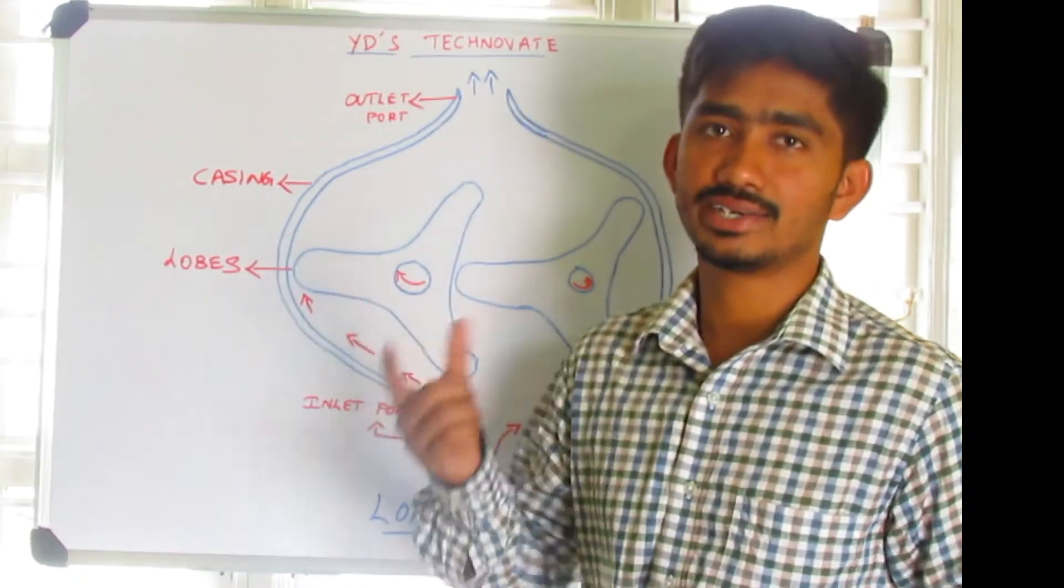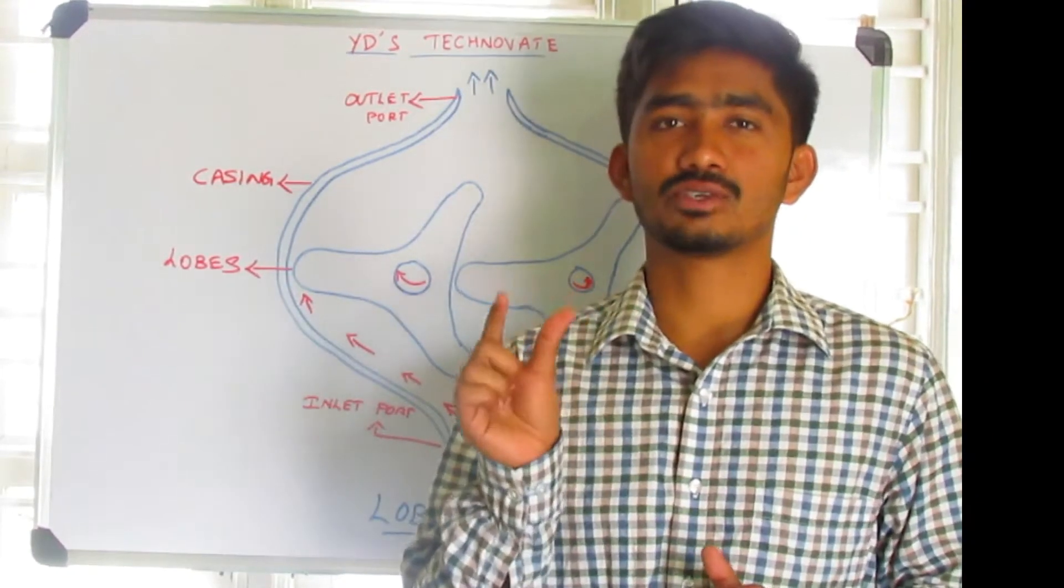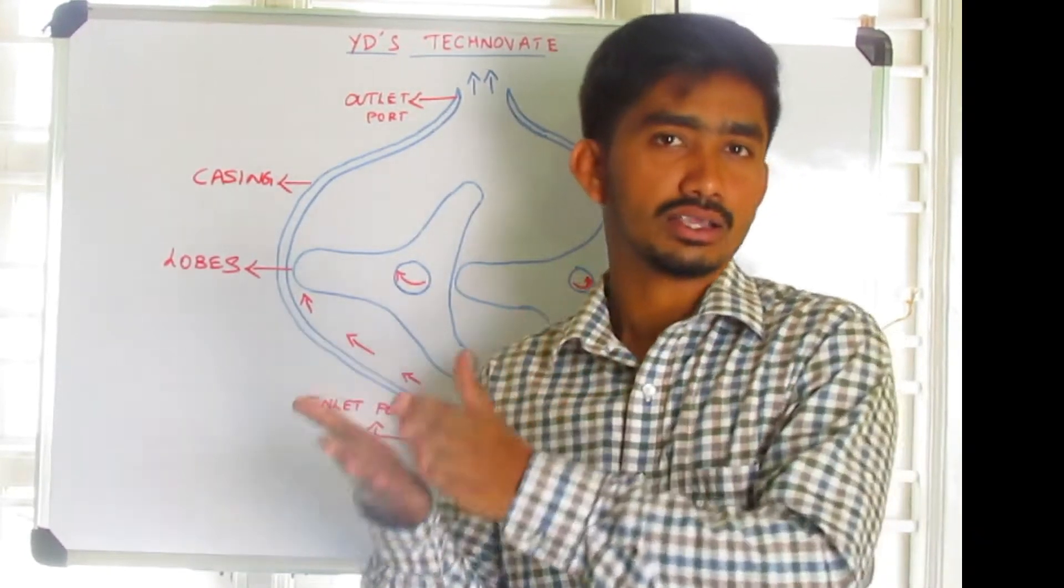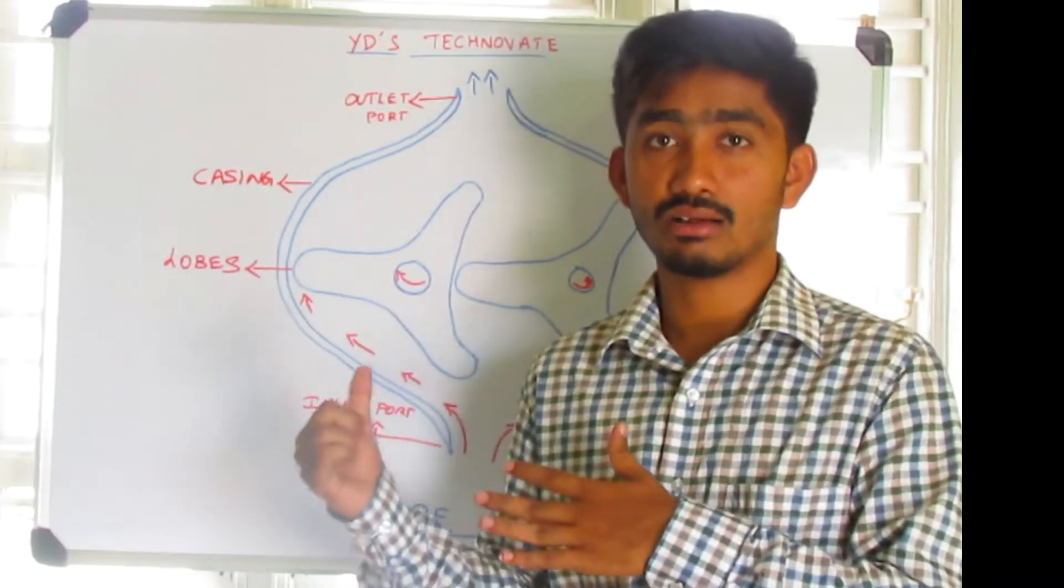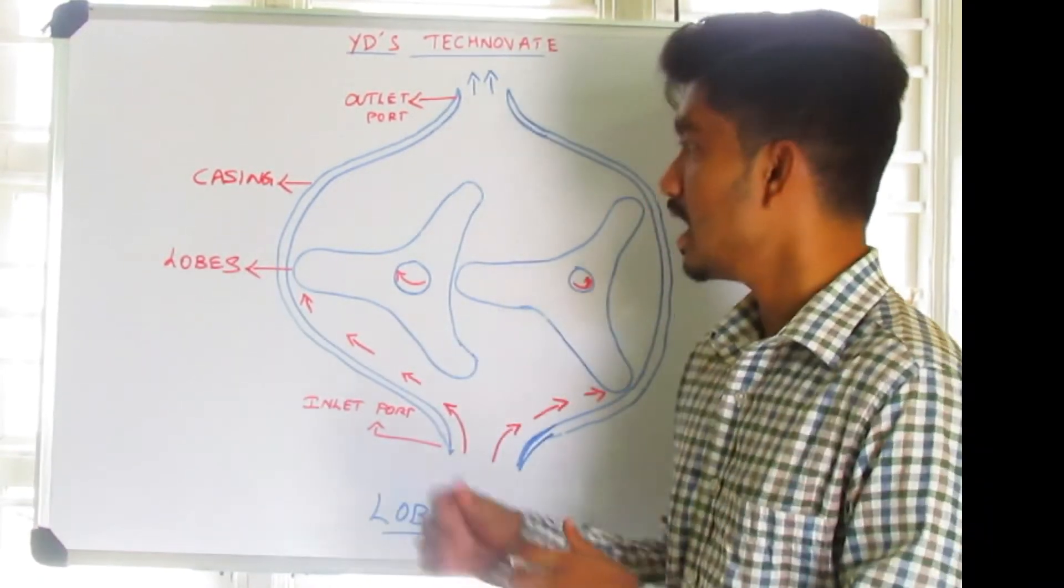Both of these are driven externally. But in external gear pump, one gear was driven externally and the second gear was driven with the help of the first gear. But here both the lobes are driven externally and the mating part has gap.